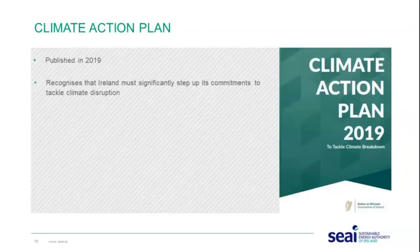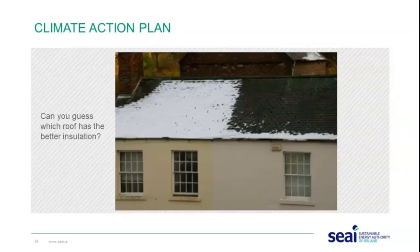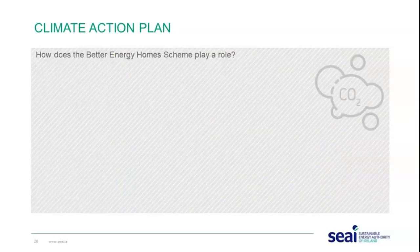A little bit about the background: the Climate Action Plan was published in 2019 and it recognizes that Ireland must significantly step up its commitments to tackle climate disruption. It sets out an ambitious course of action to address this issue. Our homes use 7% more energy than the EU average, which is a very worrying figure. This picture on the slide is a good one to show a homeowner — you can ask them to guess which roof has better insulation, as the snow is melting on the roof on the right-hand side.